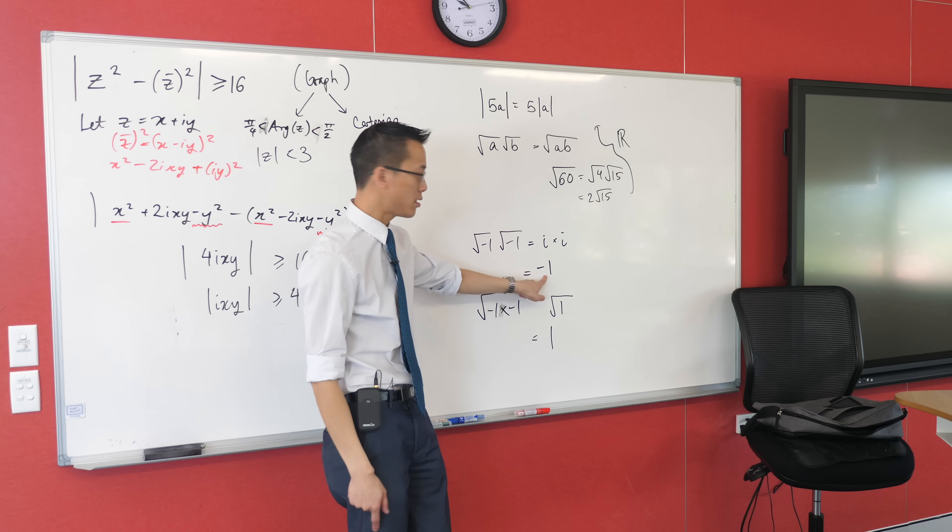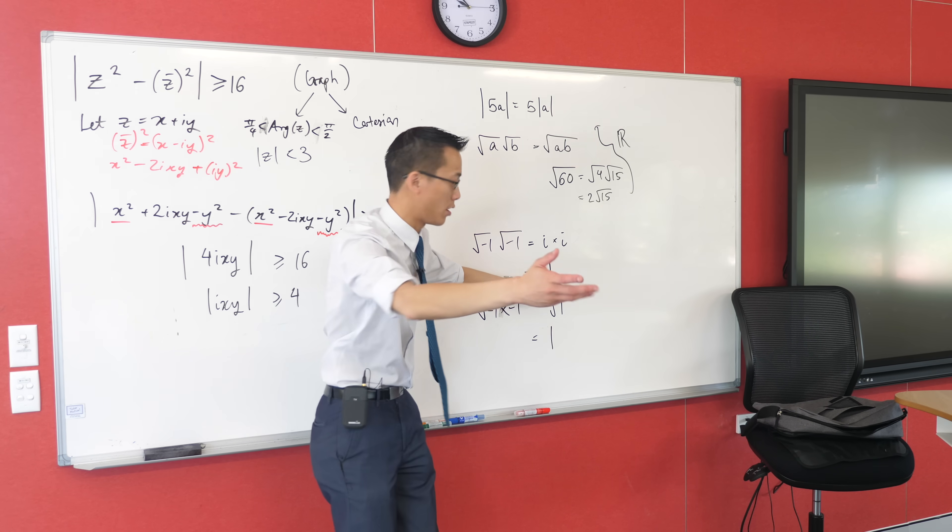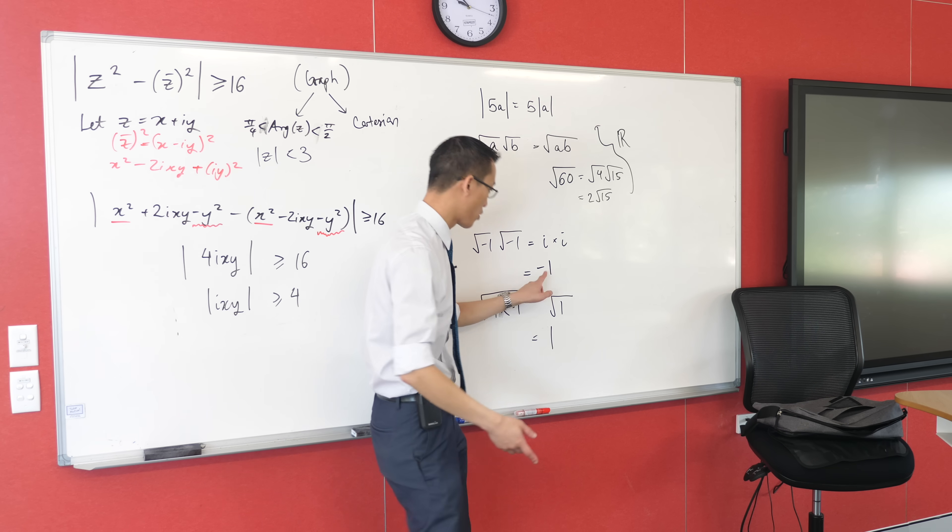Doesn't that fit this? Isn't negative one, by that definition, one of the square roots of one? Because if you multiply this by itself, sure enough, you get there, right? But instead, we restrict the domain.